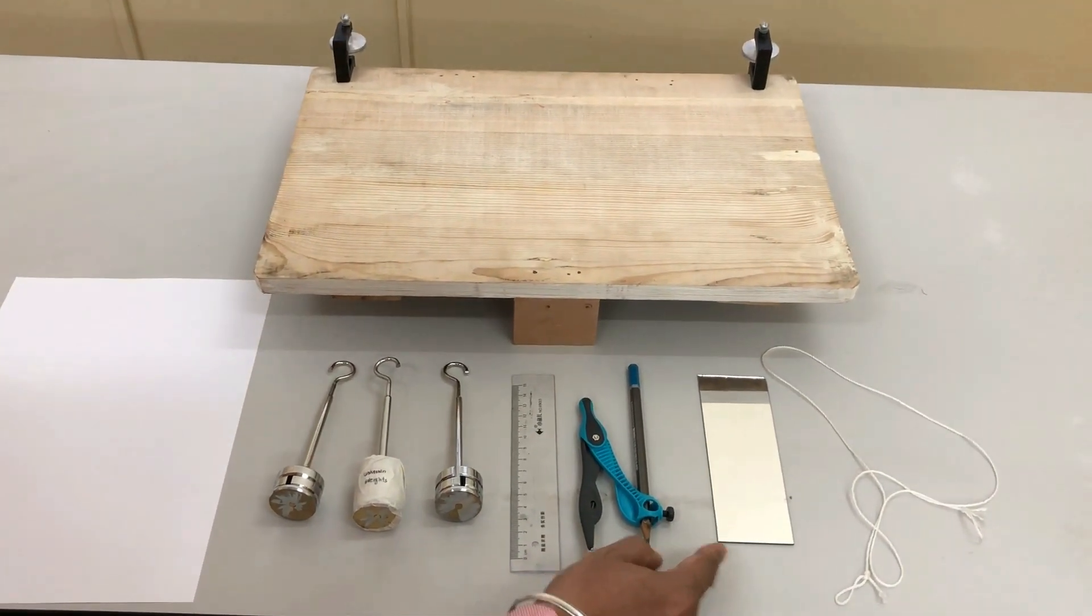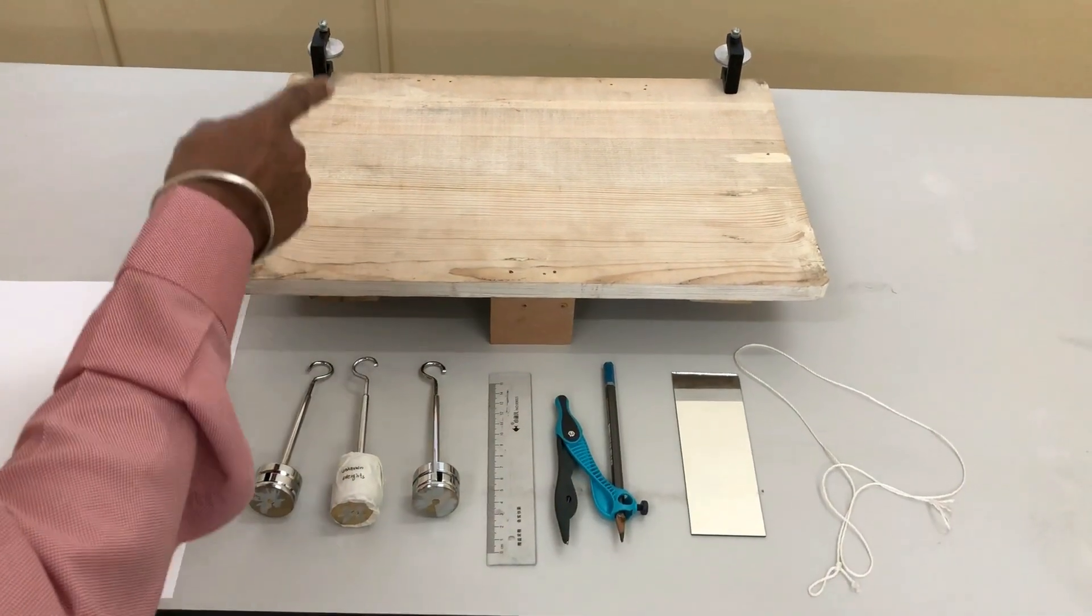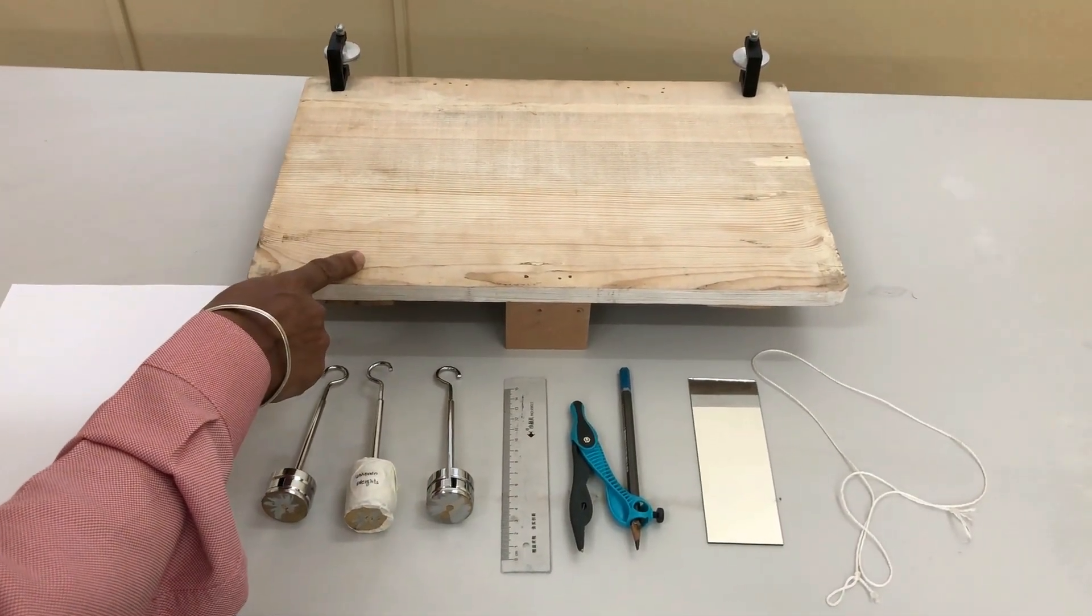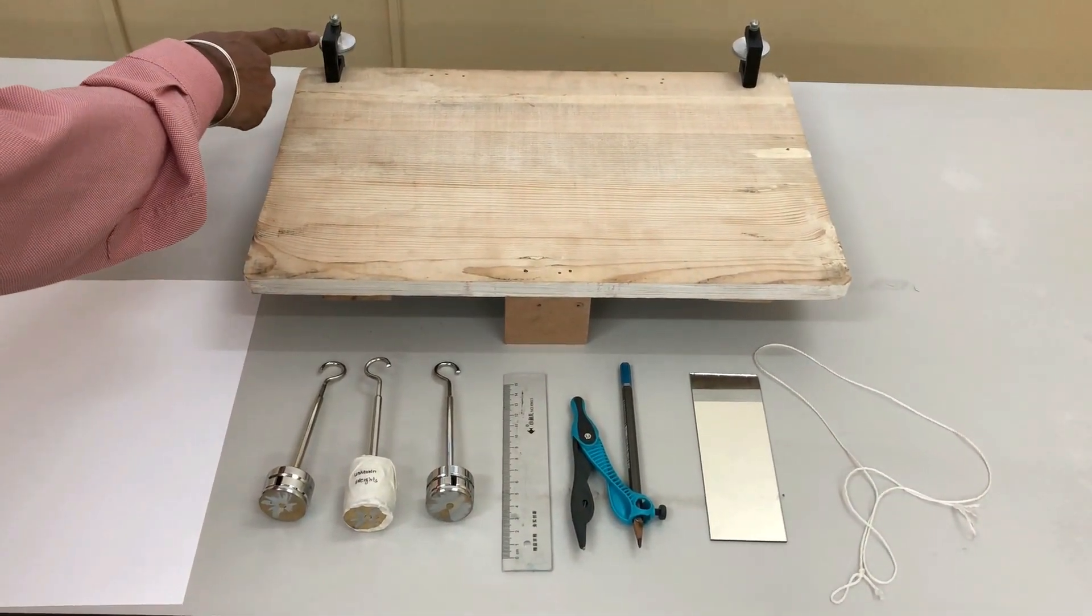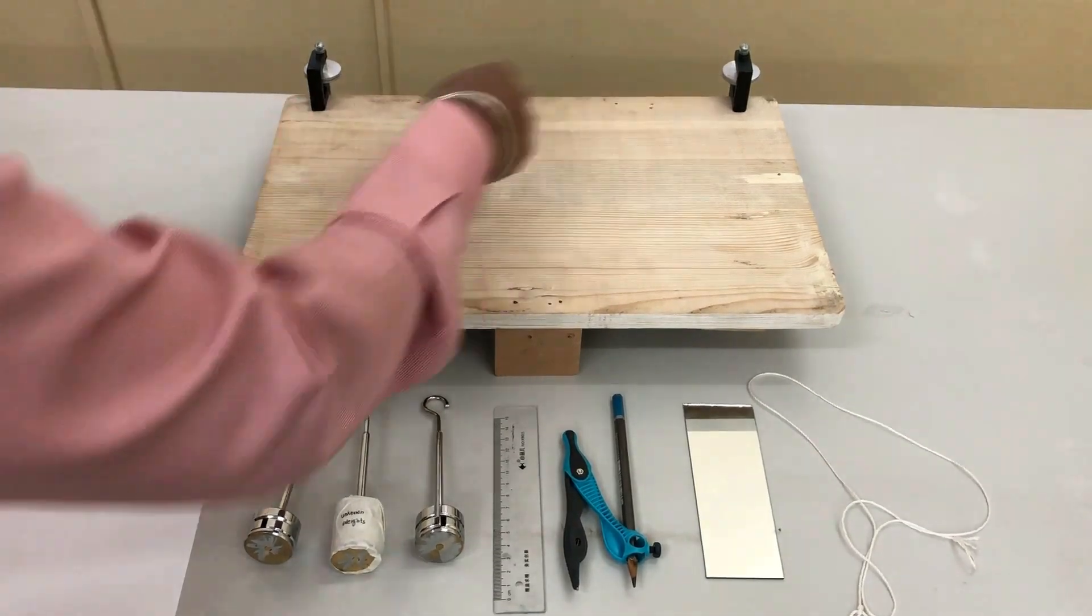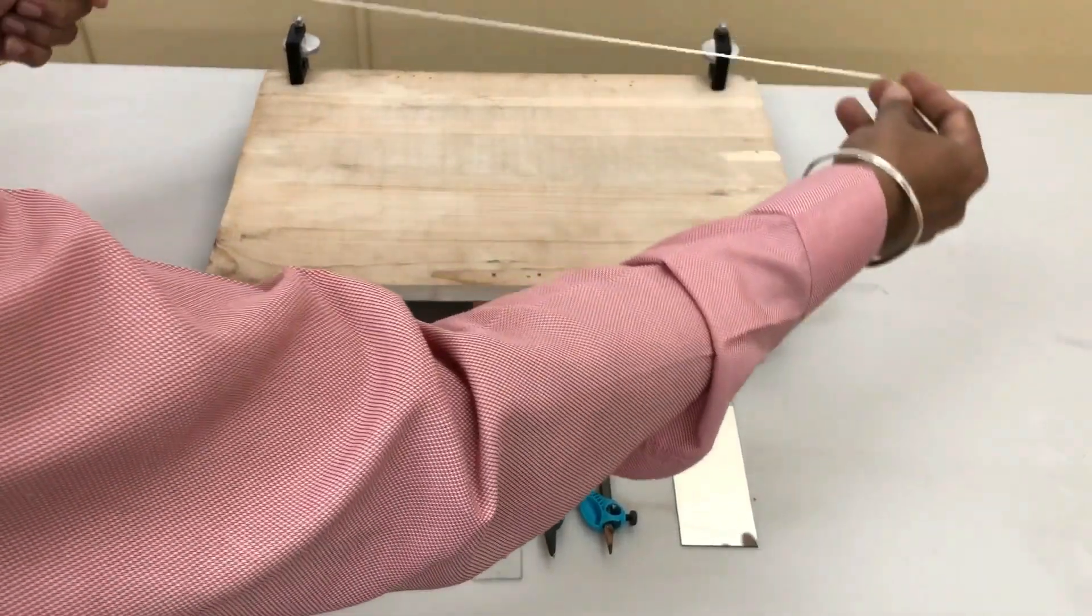You'll also need a plain mirror, a thread, and this is the main component for this experiment - this is called Gravesand's apparatus. You have pulleys over here; it is over these two pulleys that this thread has to be passed over.